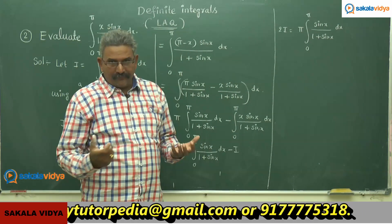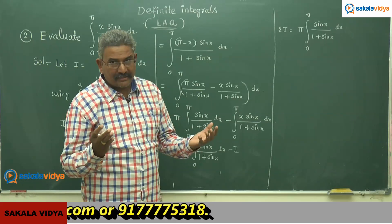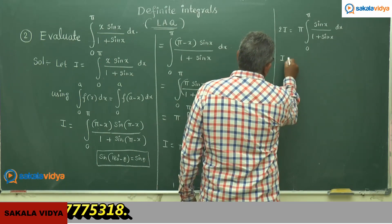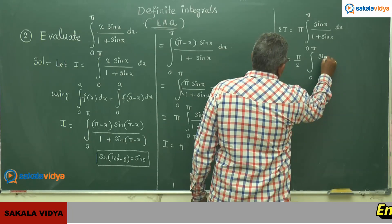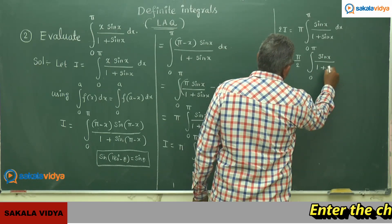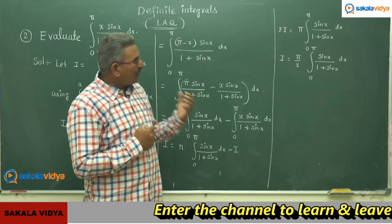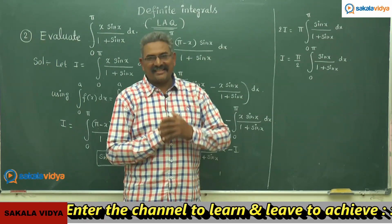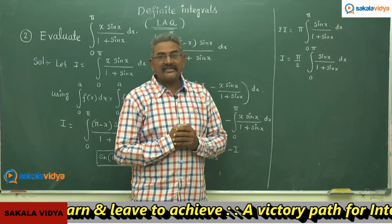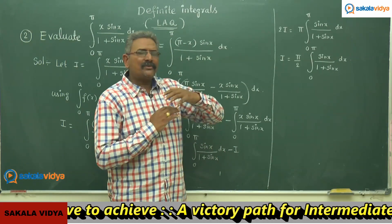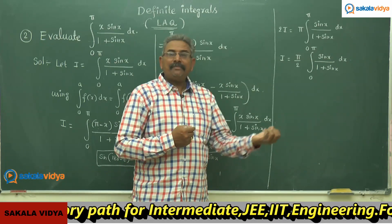Our aim is to find the value of I. So I equals π/2 times integral 0 to π of sin x by 1 plus sin x dx. A question arises: how do we evaluate integral of sin x by 1 plus sin x dx? We add 1 and subtract 1 in the numerator, converting it similarly to the previous problem of integral 1 by 1 plus sin x dx.